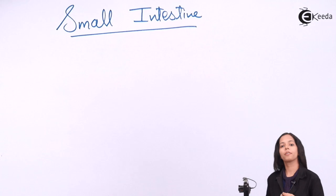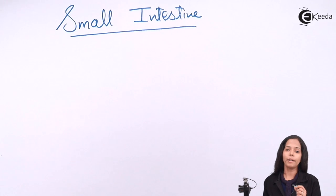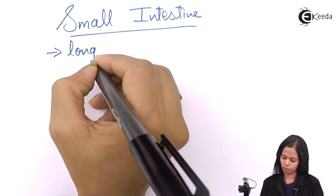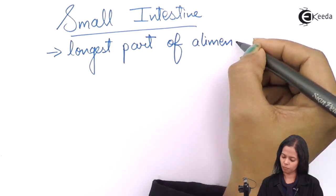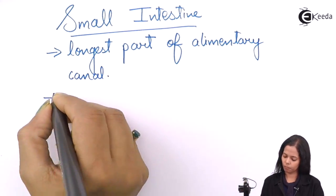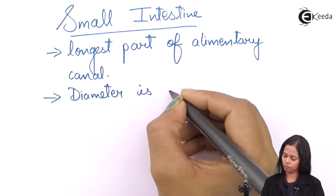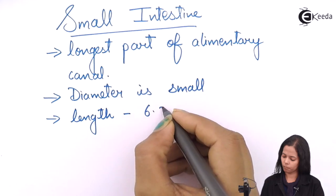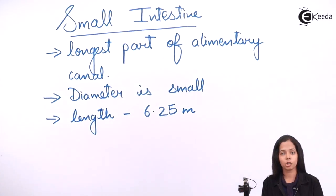The next part of the elementary canal is small intestine. The name small intestine is given on the basis of its diameter. The diameter of small intestine is less compared to large intestine, but small intestine is the longest part of the elementary canal. The length of small intestine is 6.25 meters.